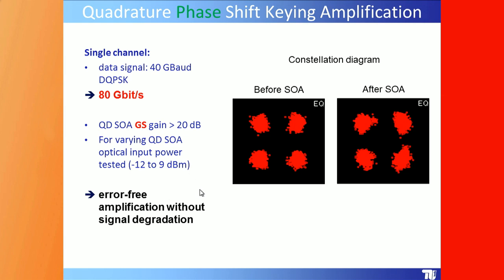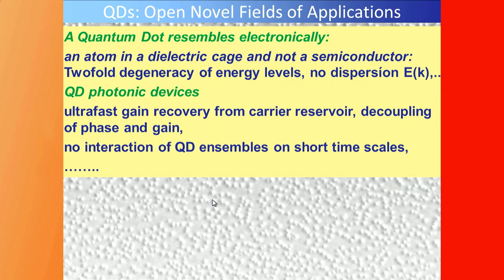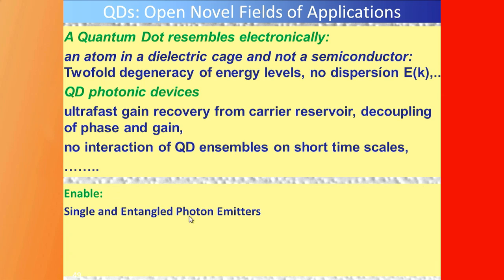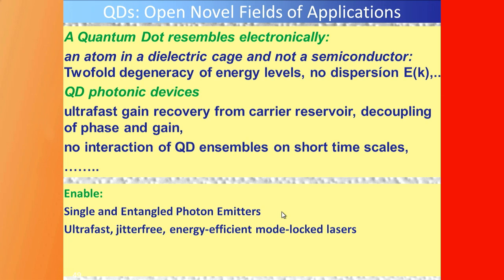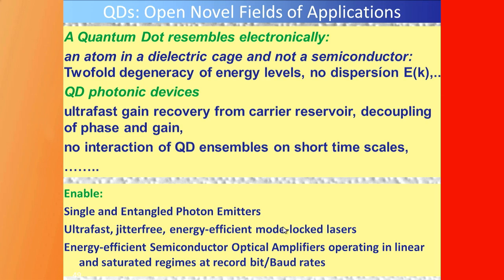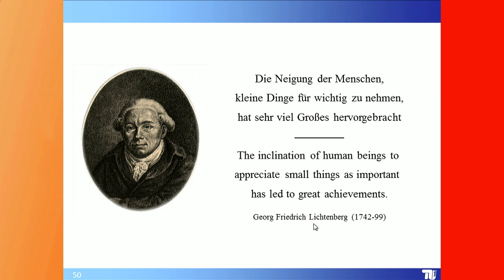Summary: a quantum dot is electronically an atom in a dielectric cage — not a semiconductor — with twofold degeneracy of energy levels, no dispersion, ultrafast gain recovery from the carrier reservoir, deep decoupling of phase and gain, and no interaction between quantum dot ensembles on short timescales. This enables single and entangled photon emitters, ultrafast jitter-free energy-efficient mode-locked lasers, and energy-efficient semiconductor optical amplifiers operating in linear and saturating regimes at record bit rates. As Lichtenberg wrote in the 18th century: 'The inclination of human beings to appreciate small things as important has led to great achievements.'